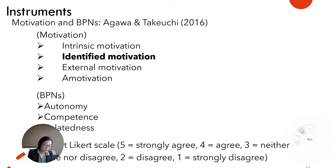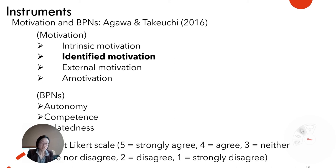Although integrated regulation is a form of extrinsic motivation, the degree of internalization is greater than the other subtypes of extrinsic motivation, hence having a greater degree of autonomy. A five-point Likert scale was used for students to rate their perceived autonomy, competence, and relatedness. Five equaled strongly agree and one equaled strongly disagree.